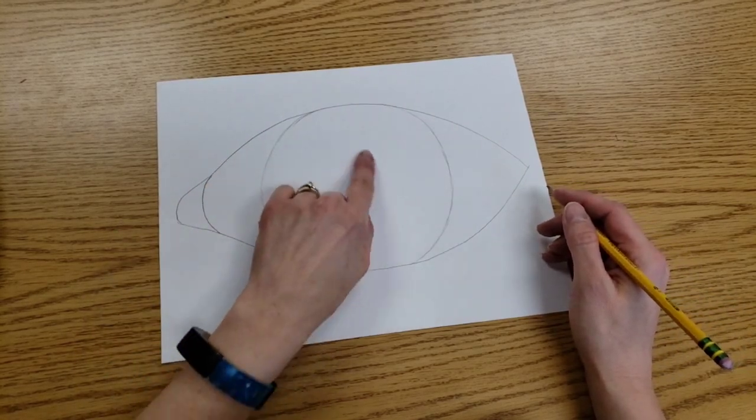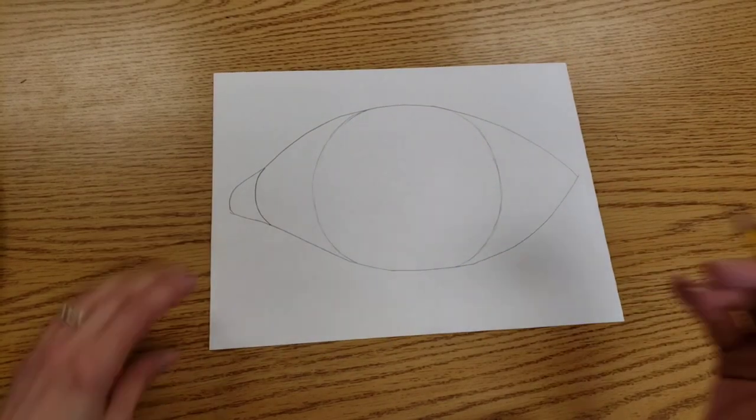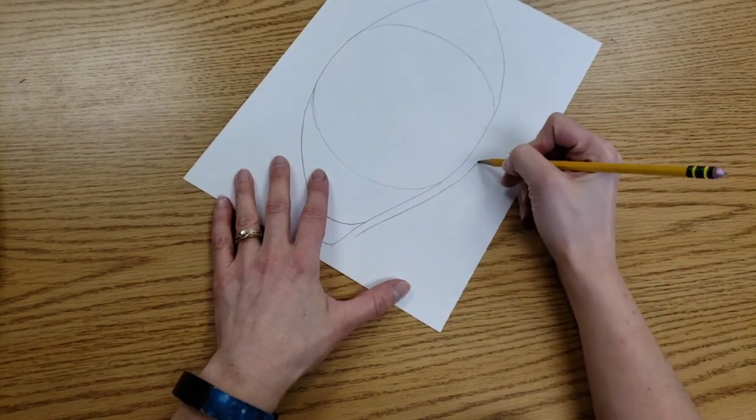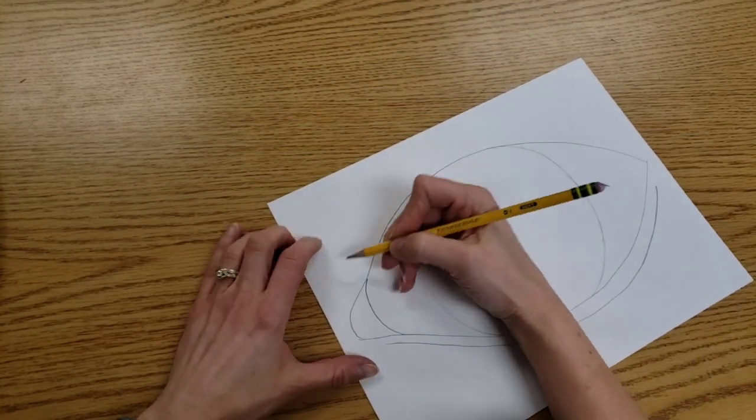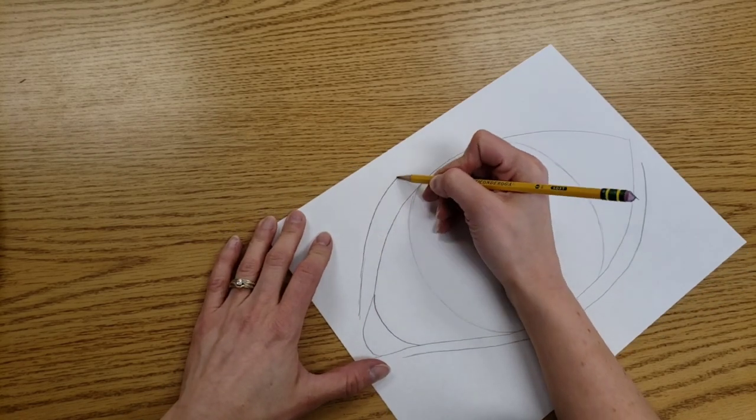We're not worrying about the pupil right now. We will deal with that later. Then we're going to show a little ridge. So we're just copying this line along the bottom of the eye and do the same thing along the top, but this one is going to be a little bigger.